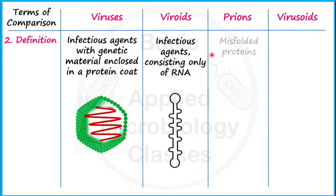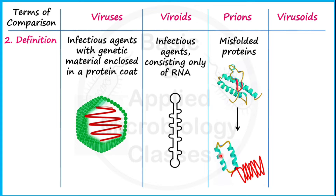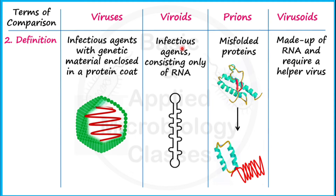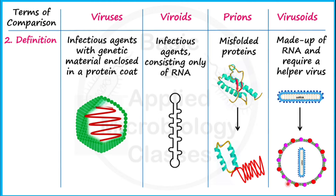Prions are misfolded proteins — abnormal proteins that don't behave normally. When prion proteins come in contact with normal proteins, they cause those proteins to undergo misfolding as well, impairing their functions which depend on proper protein shape. Virusoids are like viroids in that they are also made up of RNA without a protein coat, but their unique property is that they require a helper virus for their functioning — they get encapsulated by the helper virus to become active.